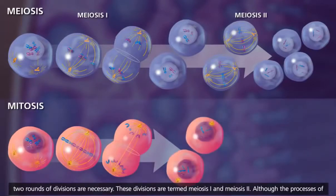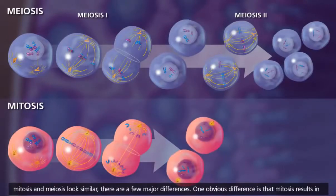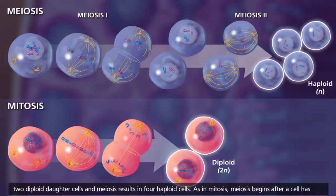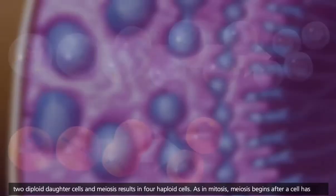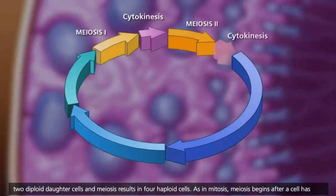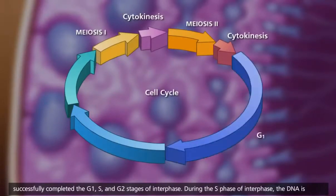Although the processes of mitosis and meiosis look similar, there are a few major differences. One obvious difference is that mitosis results in two diploid daughter cells, and meiosis results in four haploid cells. As in mitosis, meiosis begins after a cell has successfully completed the G1, S, and G2 stages of interphase.